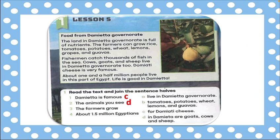Number three: The farmers grow — grow what? Letter B: tomatoes, potatoes, wheat, lemons, and guavas. Very good. Number four: About 1.5 million Egyptians — we have only A: live in Damietta governorate.